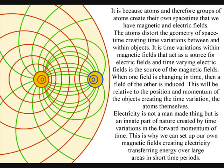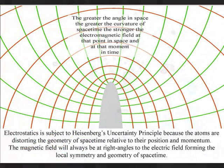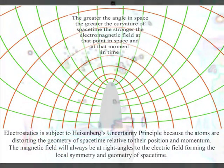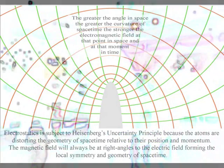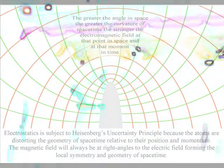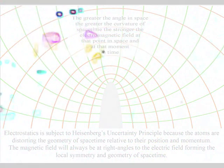A time-varying electric field acts as the source of a magnetic field, and the time-varying magnetic field are the source of electric fields. When either field is changing in time, then a field of the other is induced. This will be relative to the position and momentum of the objects creating the time variation, the atoms themselves.